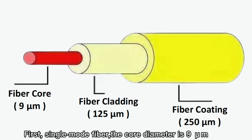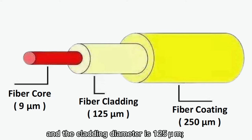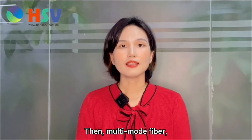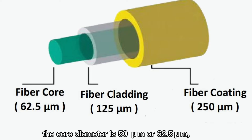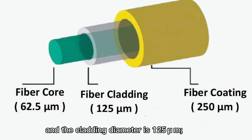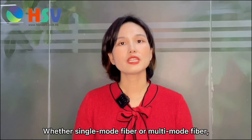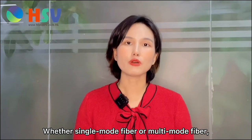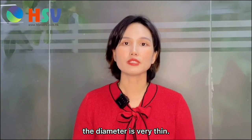First, single-mode fiber: the core diameter is 9 µm and the cladding diameter is 125 µm. Then, multi-mode fiber: the core diameter is 50 µm or 62.5 µm, and the cladding diameter is 125 µm. Whether single-mode fiber or multi-mode fiber, the diameter is very thin.